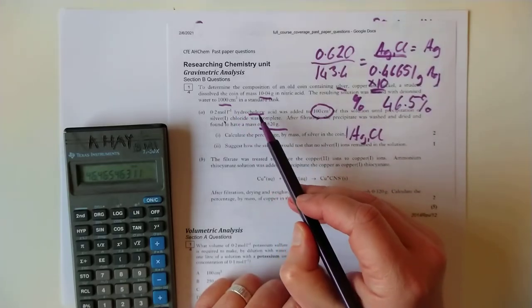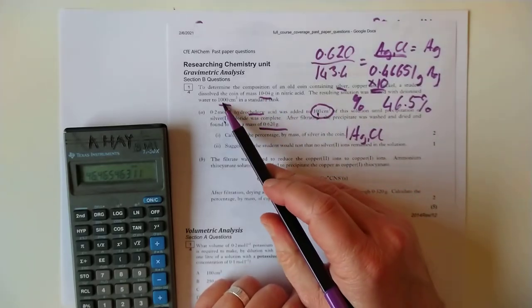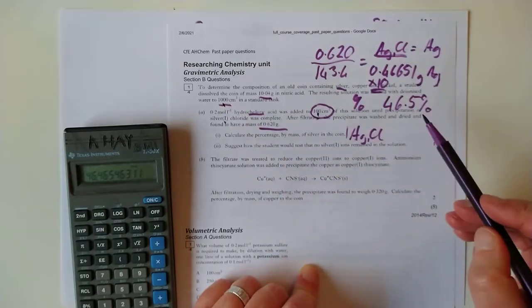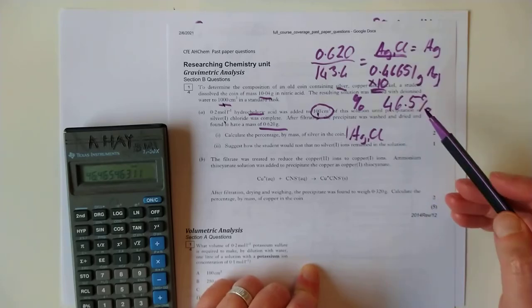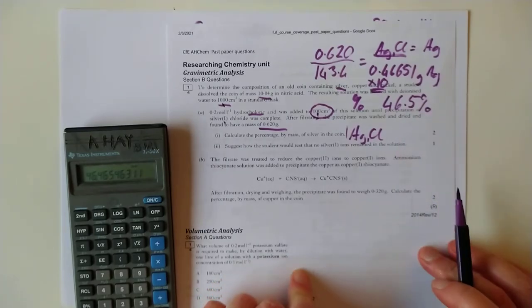I then turned that back into a mass of silver. I had to do this extra little times 10 thing because that's what advanced hires like. They're sneaky. Because we were only precipitating out 100 mils of the original 1000 mil sample. So then we work out the total mass of silver, turn it into percentage, and that's what's done. Two marks.